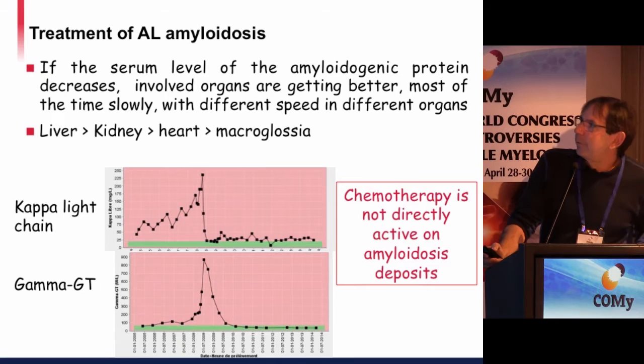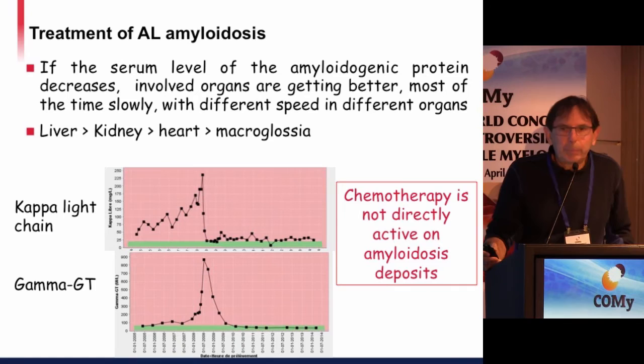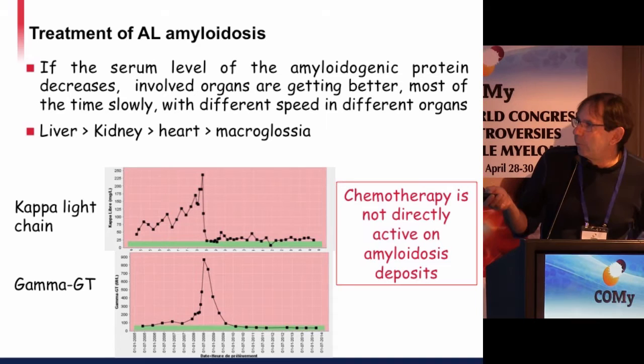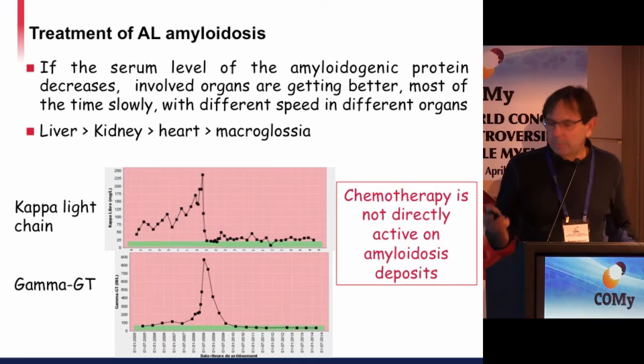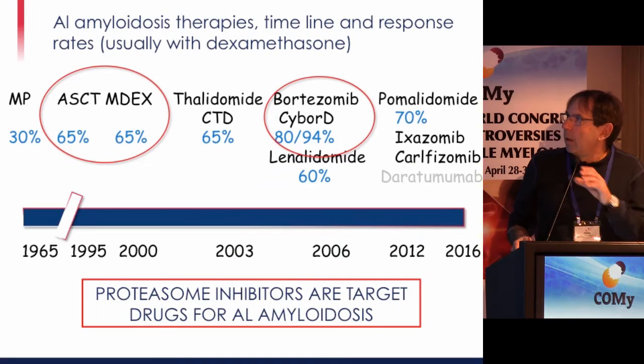If treatment is efficient, involved organs improve, but most of the time very slowly, at different speeds in different organs. The liver responds relatively rapidly; it takes much longer in the kidney, the heart, or in macroglossia. In a patient with hepatic involvement and a very good hematologic response, you can see a very good organ response. It is important to keep in mind that chemotherapy is not directly active on amyloid deposits.